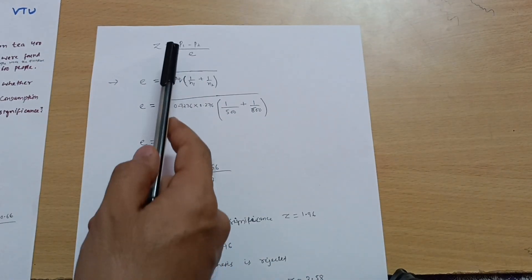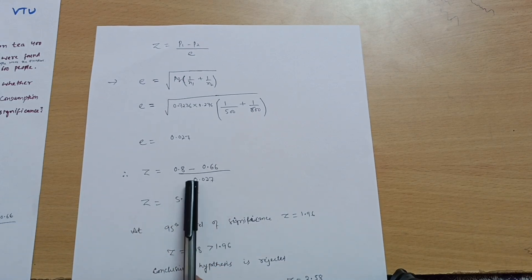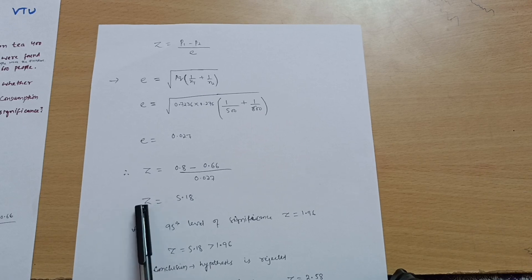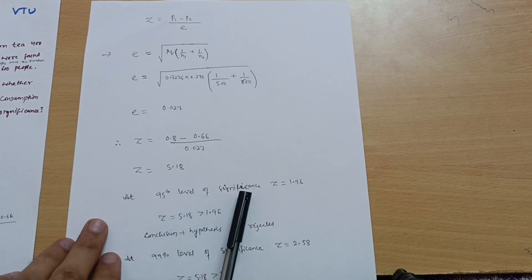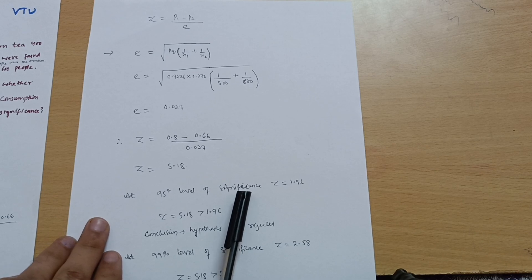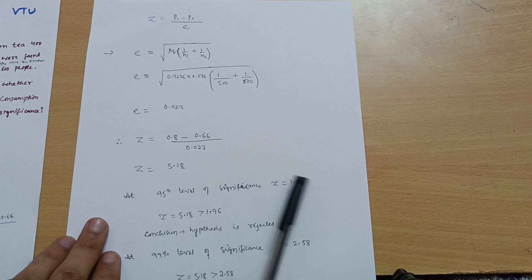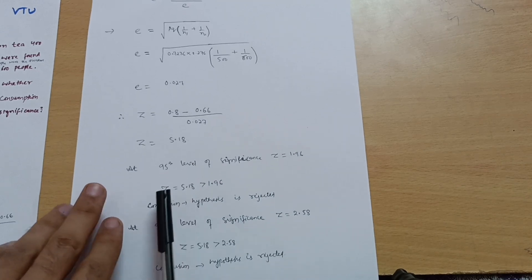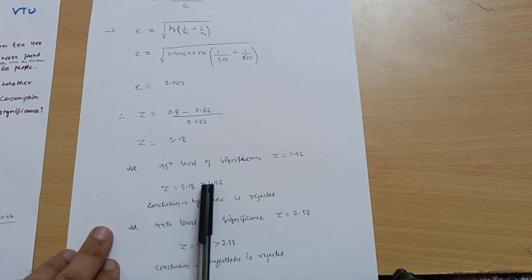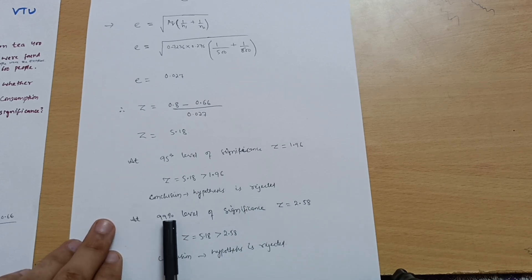Now substitute into the Z formula: Z = (0.8 − 0.66) / 0.027, giving Z = 5.18. At the 95% level of significance, the standard critical value is Z = 1.96. Since 5.18 > 1.96, the null hypothesis is rejected at the 95% level.